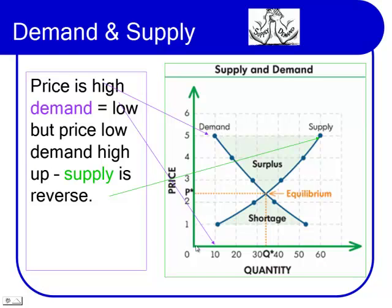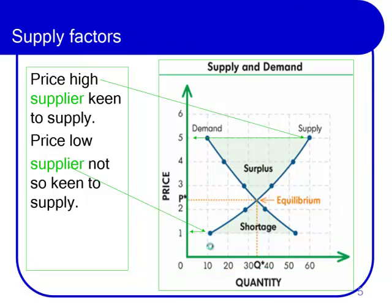When demand is high, people want less of it. When the price is high, people want less — they demand less. Price low, people want more. Supply price high, willing to supply lots. Supply price low, willing to supply less.